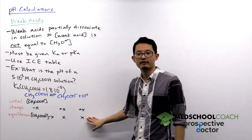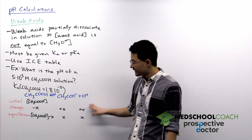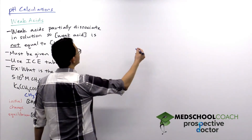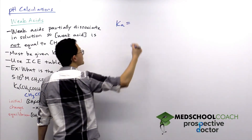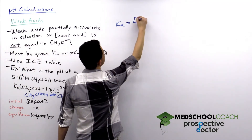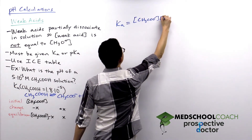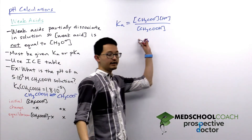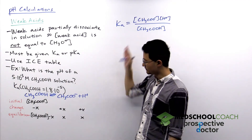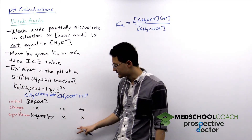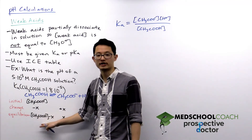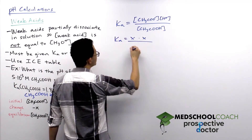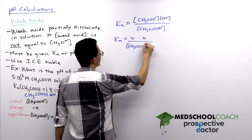The reason we drew the ICE table is that it allows us to calculate the hydrogen ion concentration using Ka, the acid dissociation constant — which is just the equilibrium constant for the dissociation reaction. Ka equals the acetate concentration times [H⁺] divided by the acetic acid concentration, CH₃COOH. At equilibrium, the acetate and hydrogen ion concentrations are X, and the acetic acid concentration is its initial minus X. So we fill that in: Ka = X² / (CH₃COOH − X).